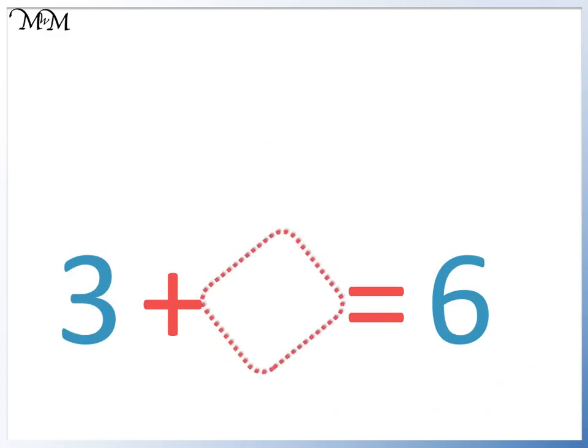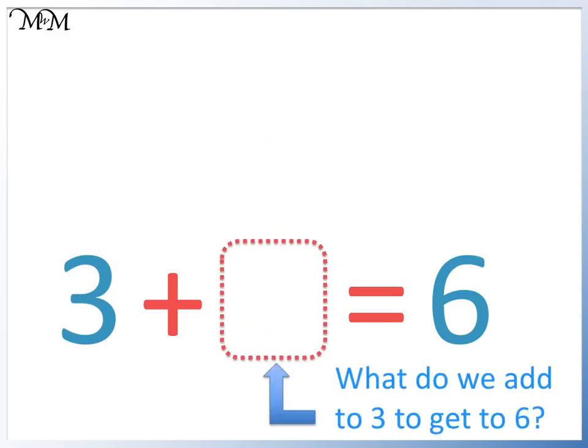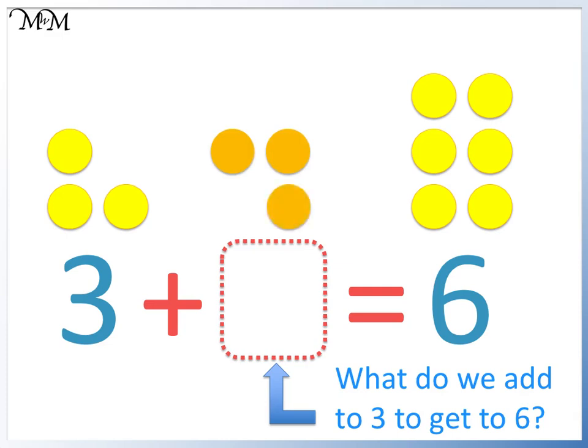What do we add to 3 to make 6? Here is 3 and here is 6. We can count on 1, 2, 3, 4, 5, 6. We have added 3. Alternatively, we could have done 6 subtract 3 to leave 3.